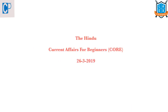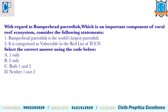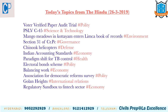Welcome to the Hindu Current Affairs for Beginners. Let's start today's session by first seeing the answer to yesterday's question regarding the Bumphead Parrotfish, which is an important component of the coral reef ecosystem. The Bumphead Parrotfish is the world's largest parrot fish — this statement is correct — and it is characterized as Vulnerable according to the IUCN Red List. As both statements are correct, the answer is C: both one and two. Almost everybody answered this correctly.